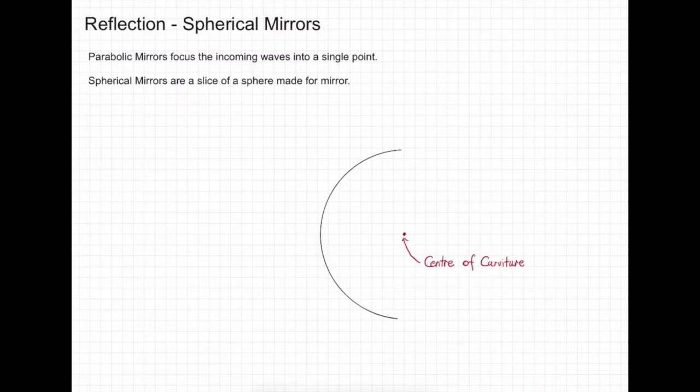Next, I'm going to draw the principal axis. This is a line that passes through the centre of the mirror, through the centre of curvature, and extends to infinity on either side.